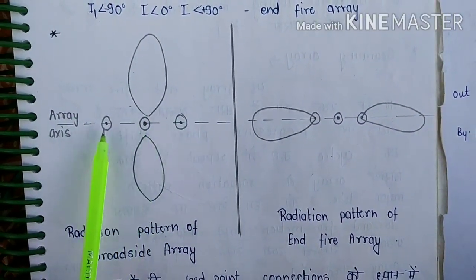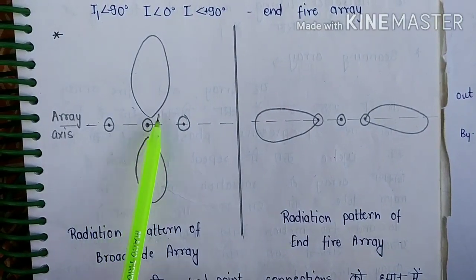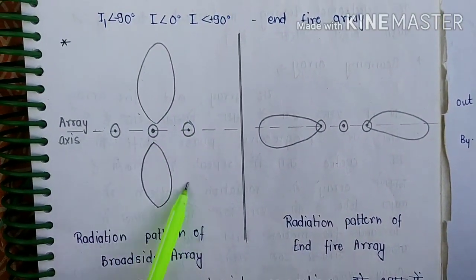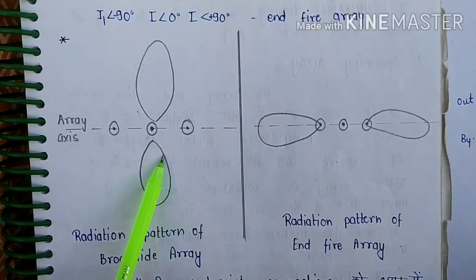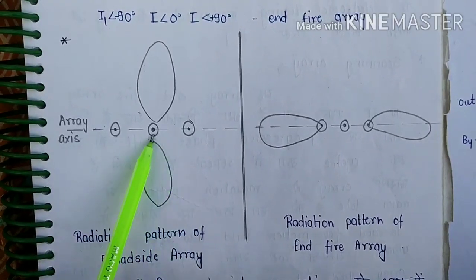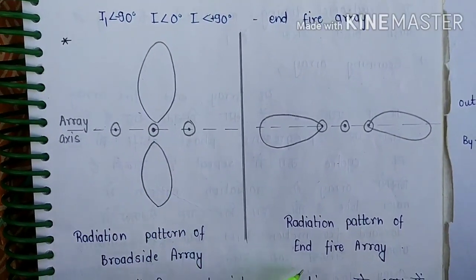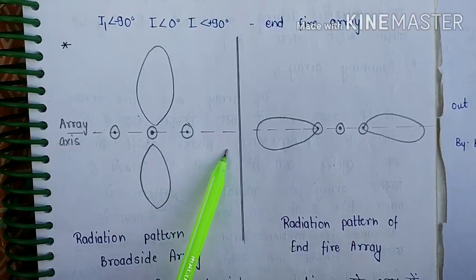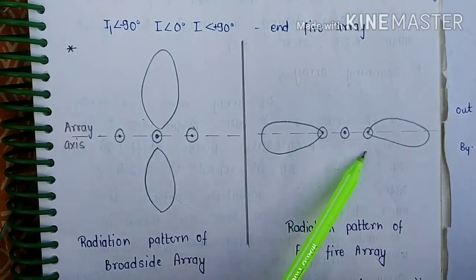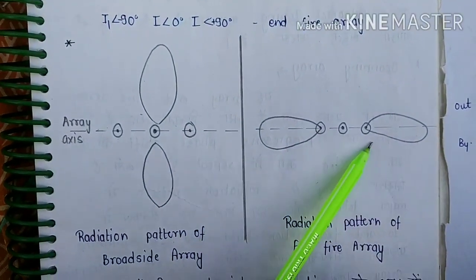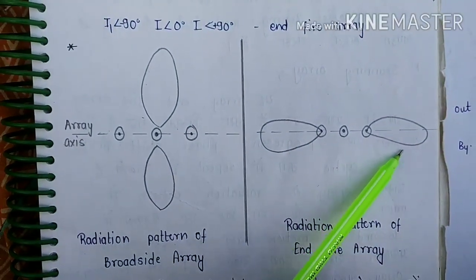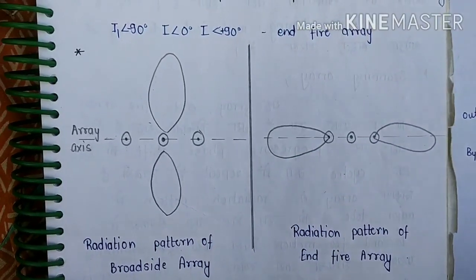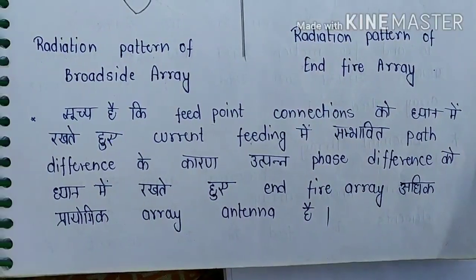In the broadside array radiation pattern, radiation is perpendicular at 90 degrees to the array axis. In the end-fire array radiation pattern, radiation is along the axis direction, which is 180-degree phase shifted from broadside. These are the two radiation patterns shown.